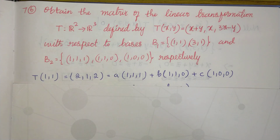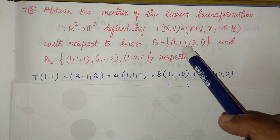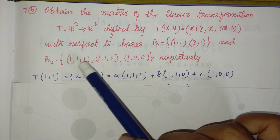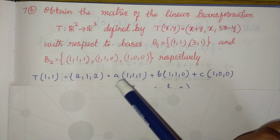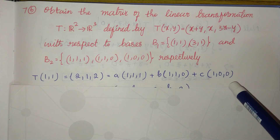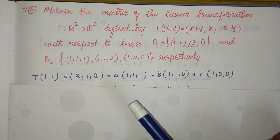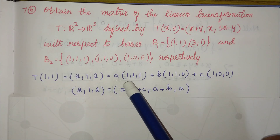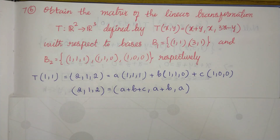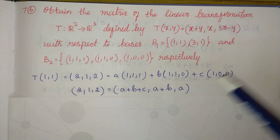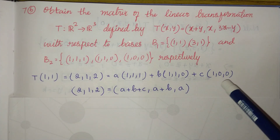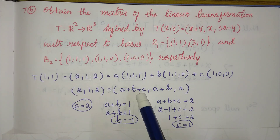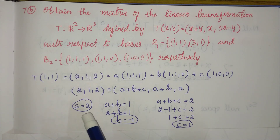Since (1,1) belongs to the domain and T(1,1) belongs to the co-domain R3, we express (2,1,2) as a linear combination of the co-domain basis elements: (2,1,2) = a(1,1,1) + b(1,1,0) + c(1,0,0). Equating components: a+b+c=2, a+b=1, and a=2. Directly, a=2. Substituting, we get b=−1 and then c=1.